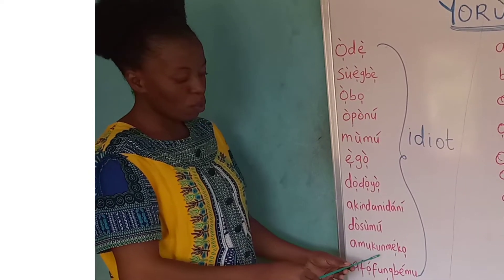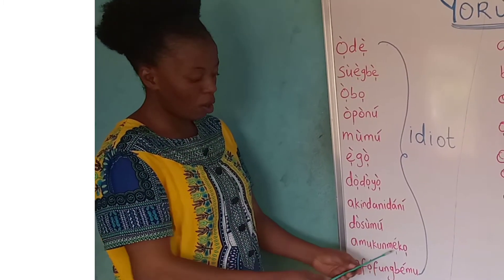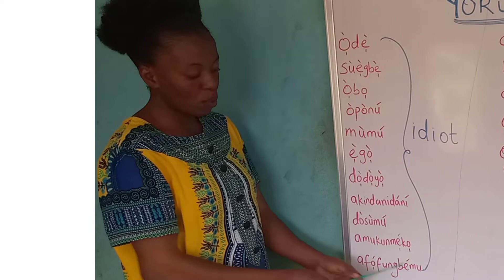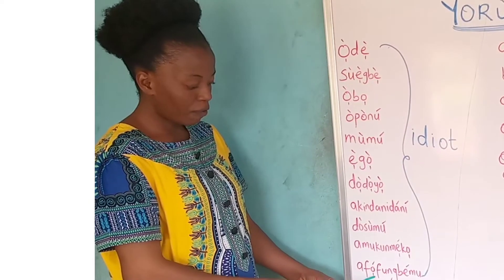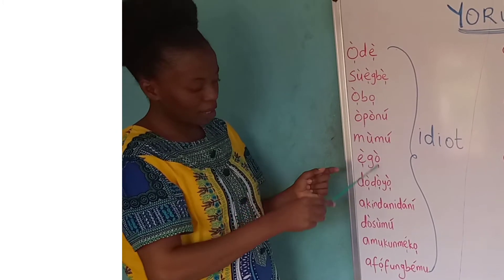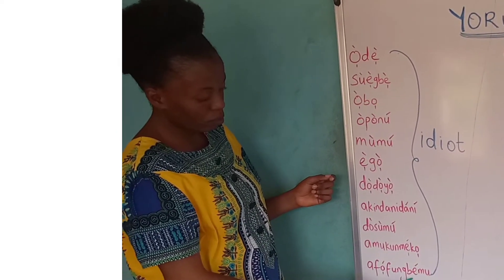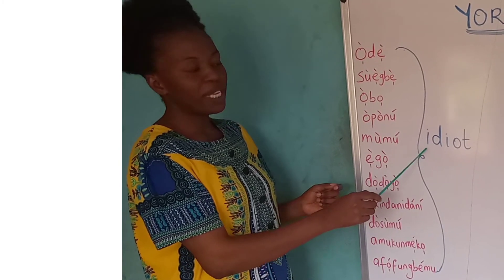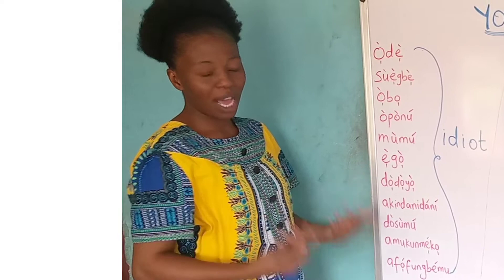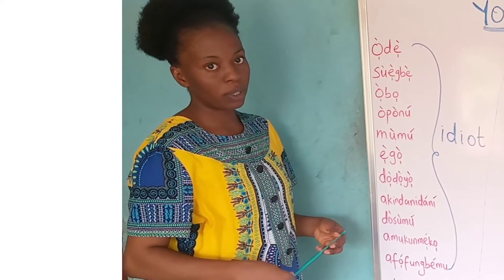Amu kumeho. Amu kumeho. All these words listed here — from Ode to the last one — all mean idiot. When somebody acts like an idiot, then you can use either of these words to abuse the person.